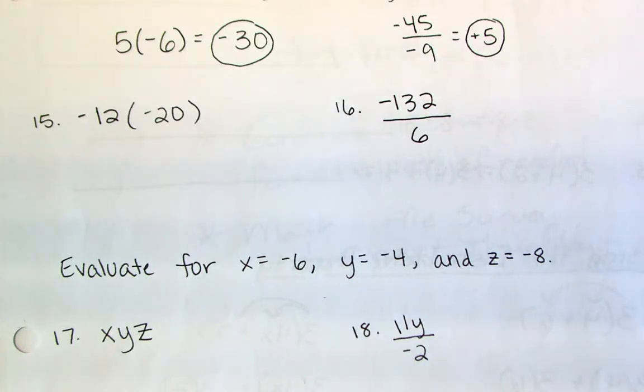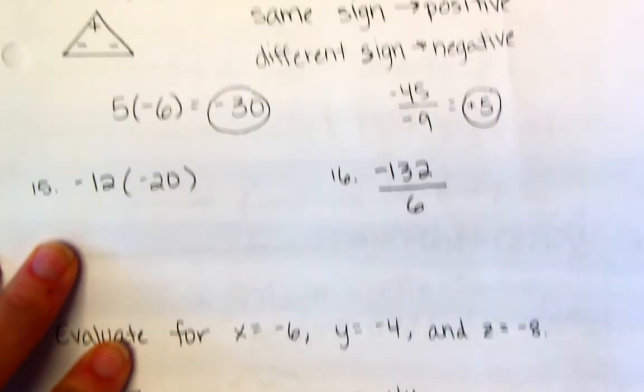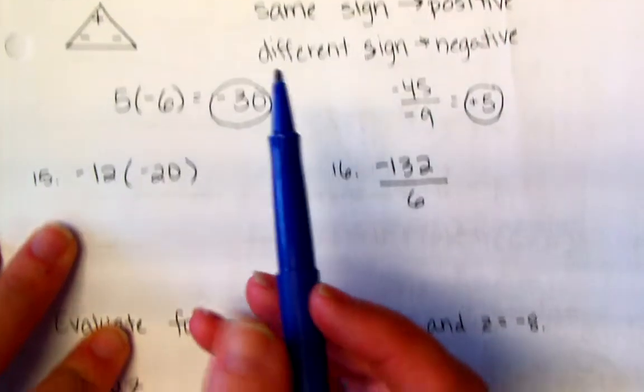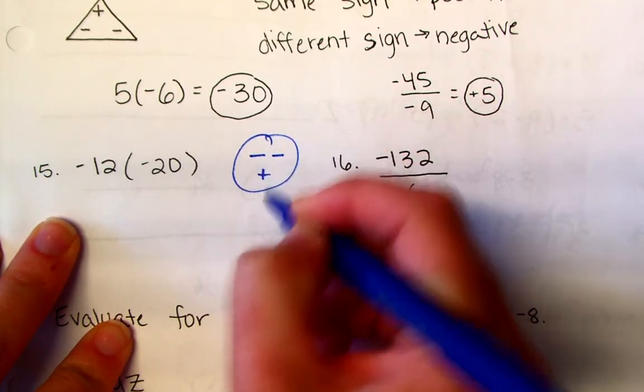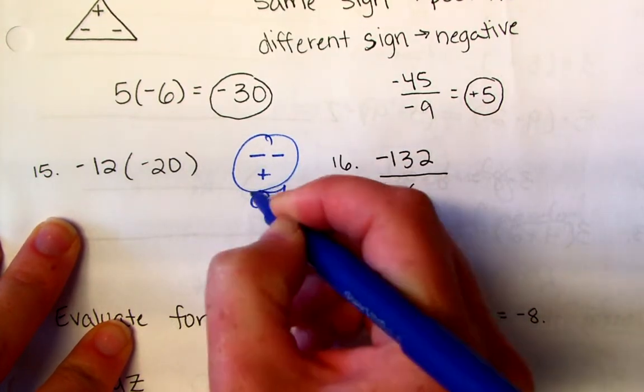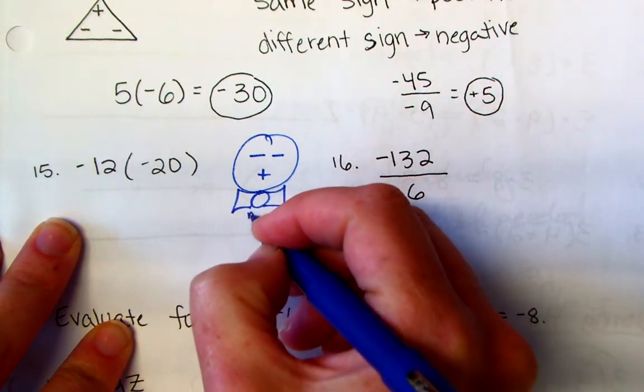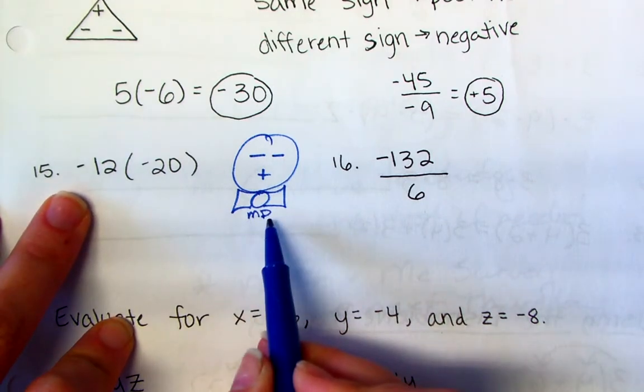So with multiplying and dividing integers, I like to use what we call the sleeping integer man. Ms. Peterson has up here on this study guide this triangle. It's pretty much the same thing. What I like to call him the medical doctor because doctors are usually tired. So I like to call him the medical doctor because that reminds you that it's only for multiplication and division.